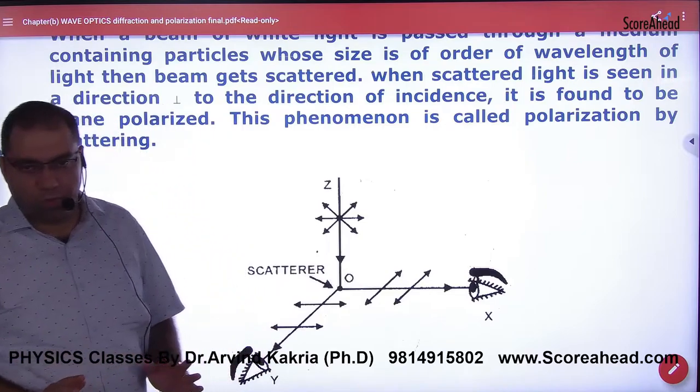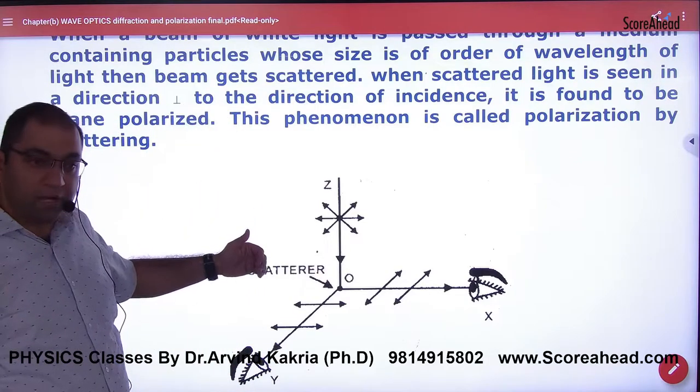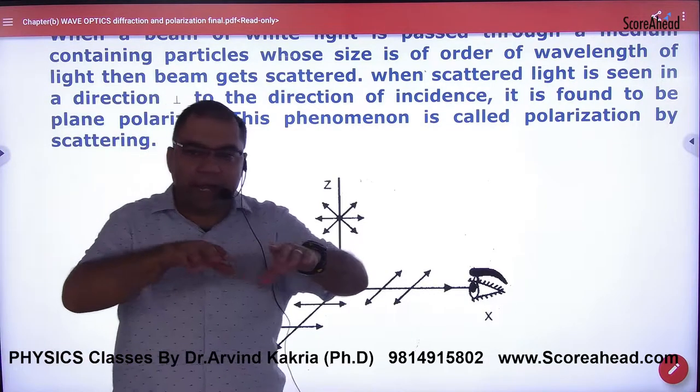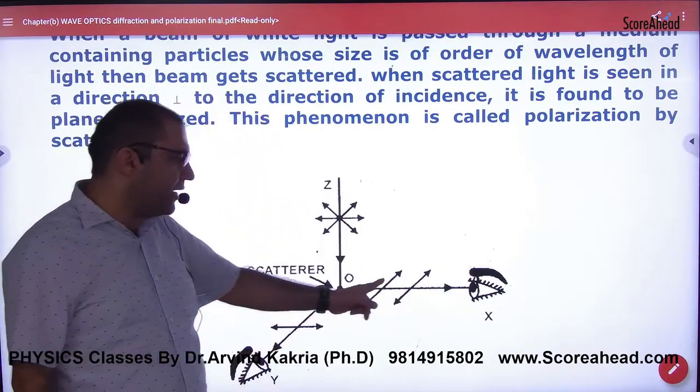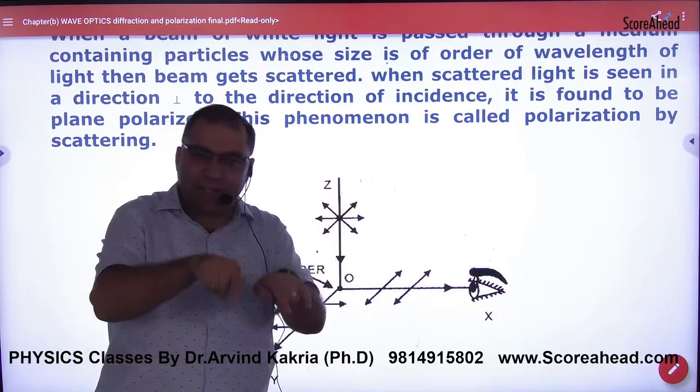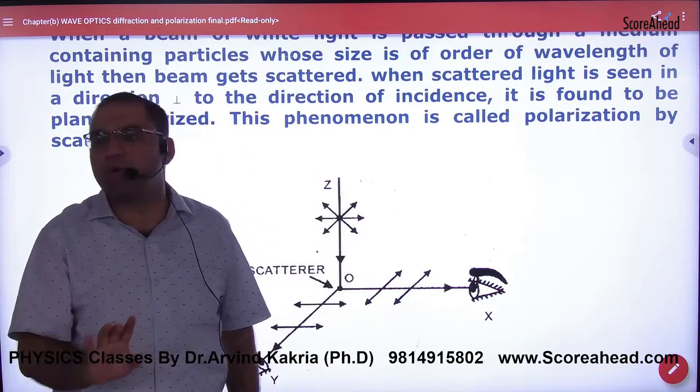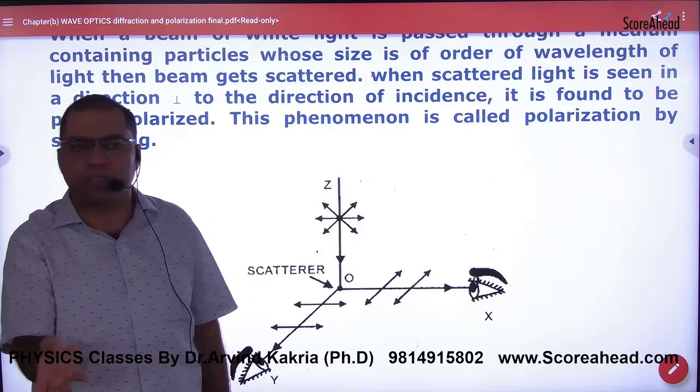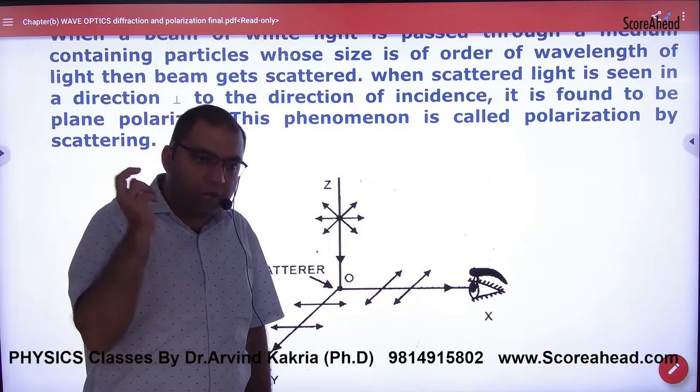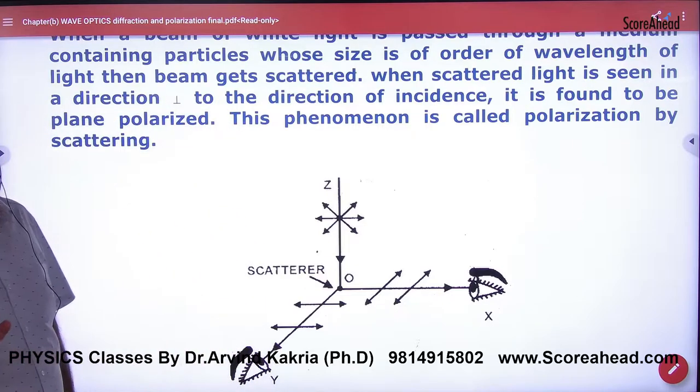If you see the scattered light, in the perpendicular direction at 90 degrees, the light will be polarized. In other directions it will be partially polarized - some will be filtered, some will not. But in perpendicular direction, it will be polarized.